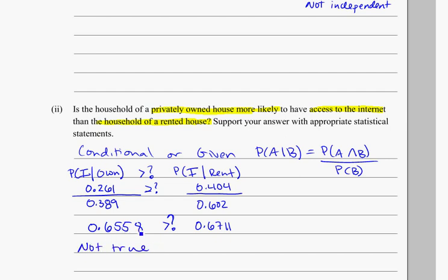Because 0.6558 is, well, not much smaller, but it is smaller than 0.67. Not a huge difference, that's like 65.5%, and this is 67%. But it is the statement that one is more likely, that this one, owning and having internet makes you more likely, is not true.